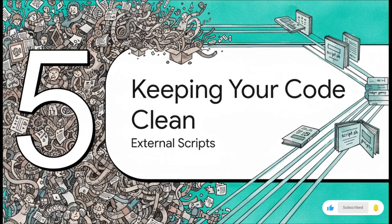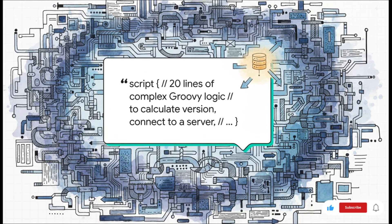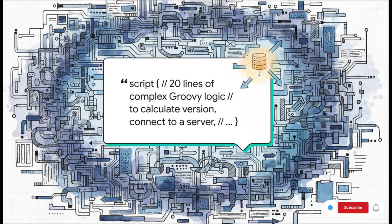For our last section, let's talk about a problem that everyone eventually runs into. Your pipeline starts simple, but then it grows and grows, and pretty soon your Jenkinsfile is hundreds of lines long and filled with complicated logic. It becomes a mess. So let's talk about a critical best practice for keeping things clean — using external scripts. You've got your Deploy stage with this massive script block containing 50 lines of gnarly Groovy code — calculating versions, connecting to servers, uploading files. It works, sure, but it's impossible to tell what's going on at a glance. The high-level 'what' is buried under all the low-level 'how'.